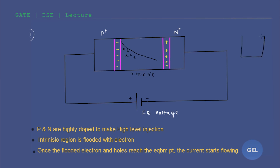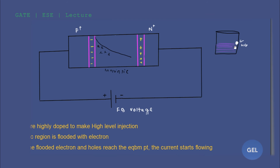How does this happen? Think of a container with a hole in it. As you increase the water level up to that hole, the water pours out. Similarly, when electrons and holes get flooded and reach the equilibrium point, current starts flowing. You need to understand and remember this much. There is a lot of detailed analysis available online, but what we've discussed is more than enough for GATE and ESC exams.